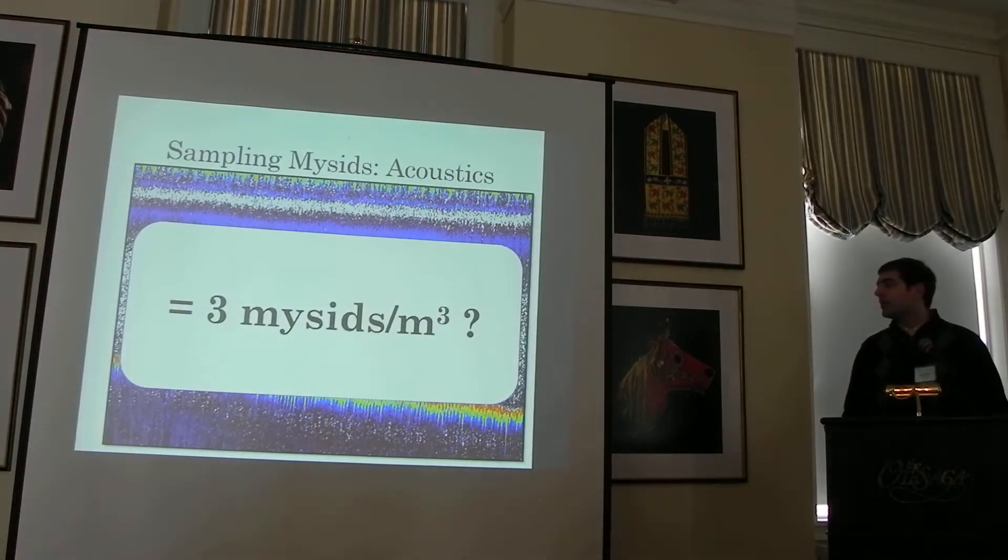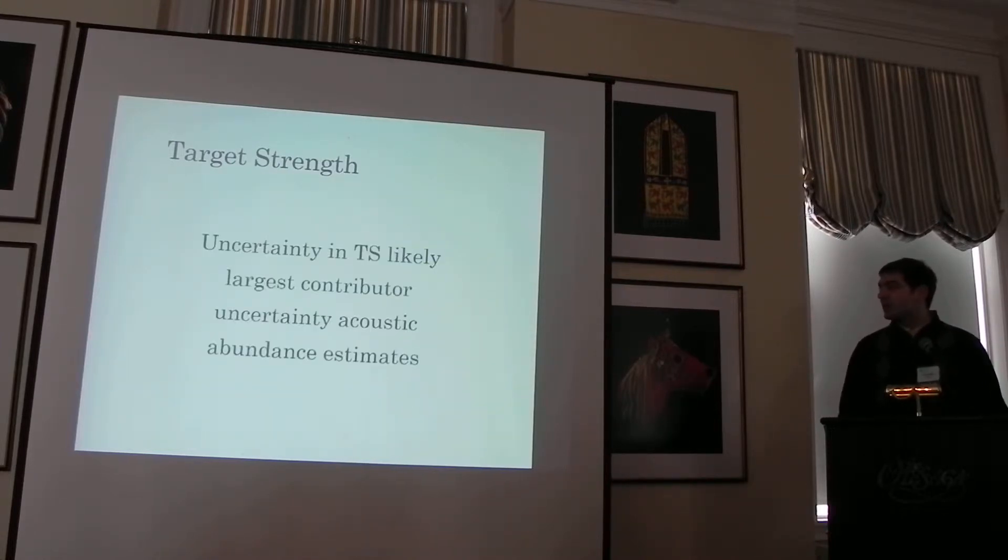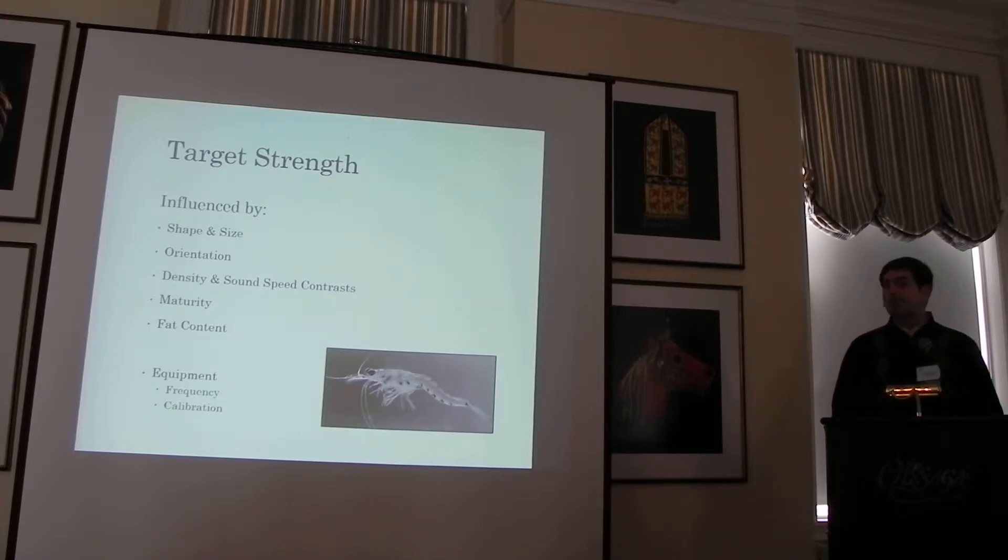The question becomes turning this into a meaningful biological number, which requires knowing the target strength and acoustic properties. You have your target strength in the linear form, which if you divide that into the overall backscatter, you can get the density. It's really important to know your target strength. It's likely to be the most influential part of the uncertainty in your acoustic abundance estimates. It's influenced by the size and shape of your organism, by its orientation, by its density and sound speed contrasts, by maturity and by fat content. Also, you have to keep in the back of your mind the equipment if you're seeing differences between two different surveys that might be calibrated something differently.